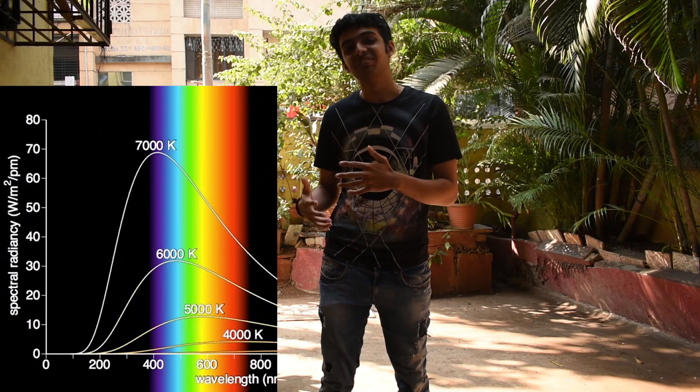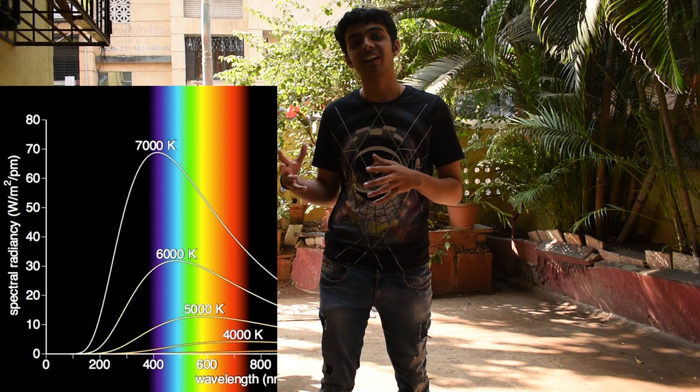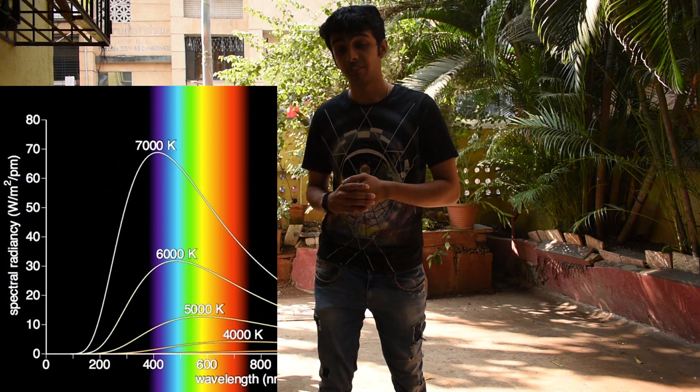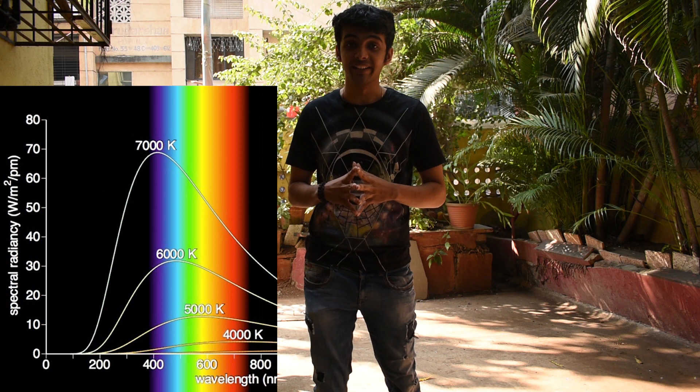Whereas the cooler stars are emitting in the red and infrared part of the spectrum. So that means hot stars should also emit in the violet, and we should see violet stars as well. As you can see from the graph, the stars that peak in the ultraviolet and violet part of the spectrum will also produce a lot of blue light. Our eyes are more sensitive to the color blue than to violet or purple. Hence, we will always see light coming off from a hotter star to be blue rather than violet.